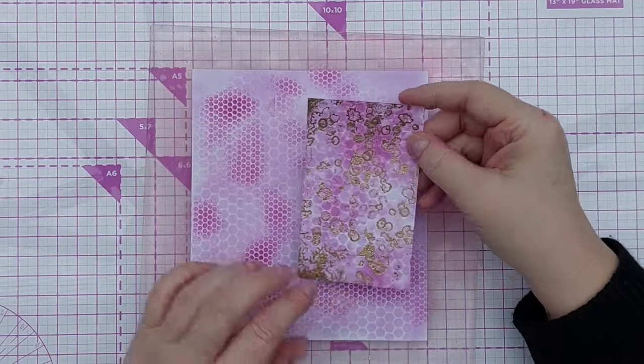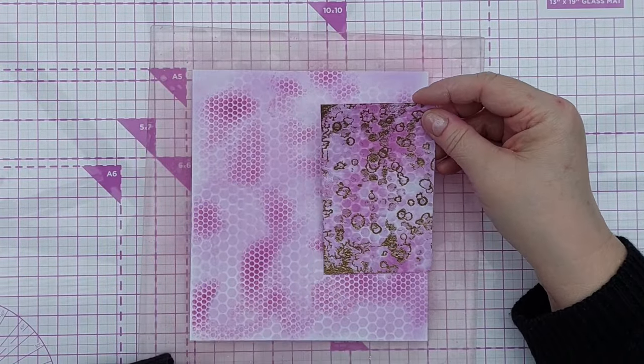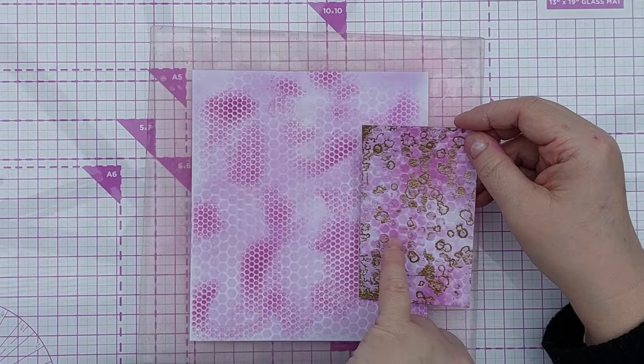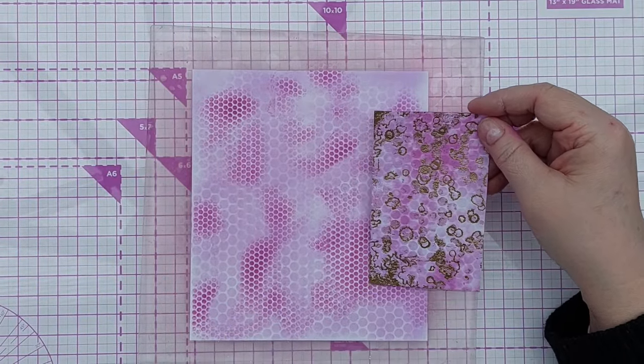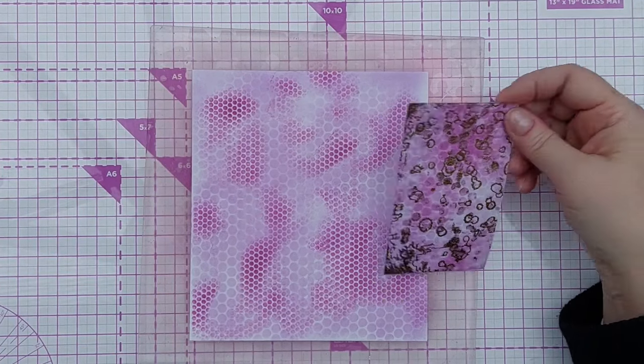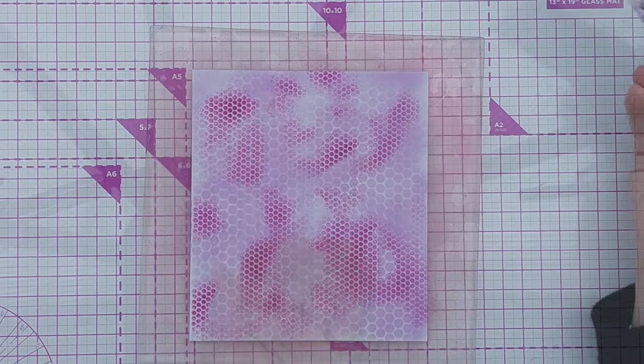This was the bit of mixed media I produced this morning for the card that I showed you already. I didn't use the smaller circles on it, I just used the larger circles with the milled lavender and seedless preserves. So there's a little bit of difference there.